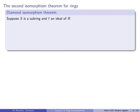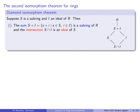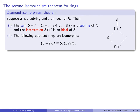Next is the second, or diamond, isomorphism theorem for rings. This states: suppose S is a subring and I is an ideal of a ring R. Then S+I — the set of all sums of the form s+i — is a subring of R. The intersection S∩I is not only a subring but is an ideal of S. Finally, the following quotient rings are isomorphic: (S+I)/I ≅ S/(S∩I).